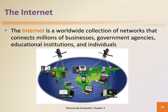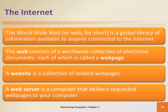The internet is a worldwide collection of networks that connects millions of businesses, government agencies, educational institutions, and individuals. A popular service on the internet is called the World Wide Web. When you think of the internet, think of a collection of computers networked together. When you think of the World Wide Web, think of a collection of documents called web pages. A website is a collection of related web pages, and a web server is a computer that delivers requested web pages to your computer.